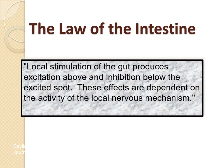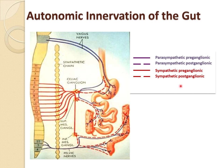The law of the intestine states that local stimulation of the gut produces excitation above and inhibition below the excited spot. These effects are dependent on the activity of the local nervous mechanism. Coming to the autonomic innervation — the extrinsic nervous system of the gut — we have parasympathetic and sympathetic innervation.